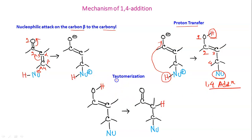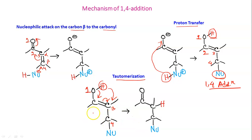Finally, there is tautomerization: the hydrogen at position 1 (oxygen) shifts to position 3. The O–H bond and C=C double bond break, a negative charge forms on carbon 3, and the proton is transferred. This is keto-enol tautomerization — from the enol form it is converted to the keto form. This completes the mechanism of 1,4-addition. We will now see some examples.